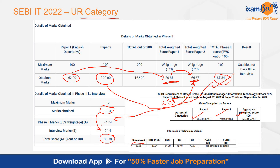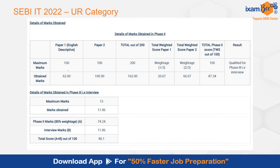The overall cutoff was 83.36, so this student just cleared it. Here is another mark sheet: the student again got 62 in Descriptive English and 100 in the coding paper. The phase 2 score was 87.34, cutoff was 85.34. The student scored 11.86 in the interview, and adding this to the weighted phase 2 score gives an overall score of 86.1.